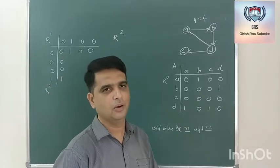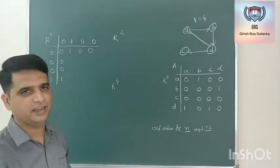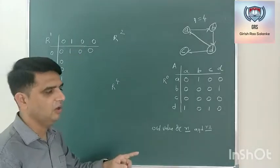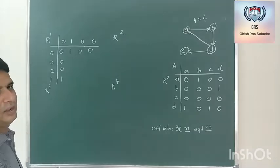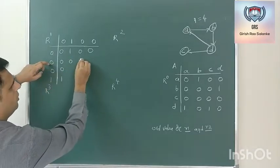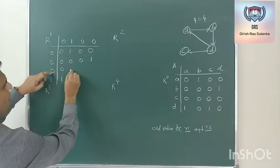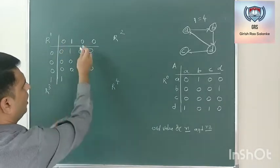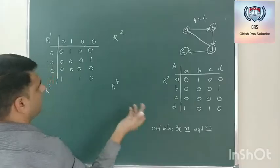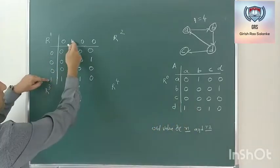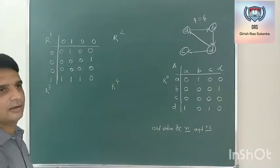Since the reference column value is 0 for rows 2 and 3, directly take the previous row value. The third and fourth columns also remain unchanged. Only one value changes: since both references are 1, we compute 1 AND 1 = 1, then 1 OR 0 = 1. This completes the first iteration.